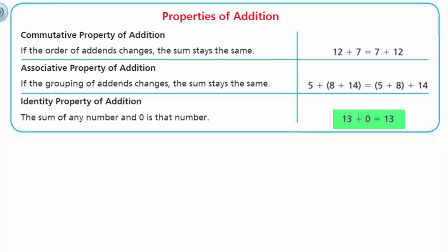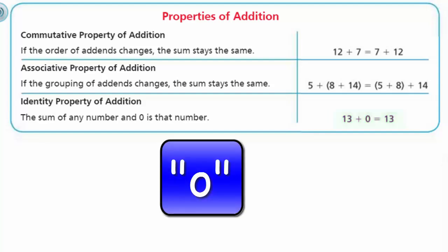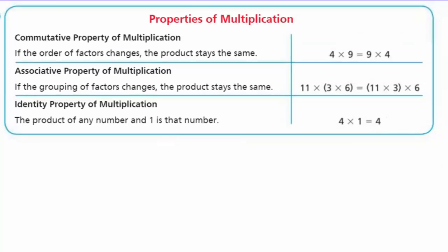It seems kind of simple because you're looking at it going, Mr. Warren, that's really obvious. 13 plus 0 equals 13. But it's important that you know this property because you'll be using it later in your educational career. Now let's look at properties of multiplication. Properties of multiplication are similar. They really are. Except that we're multiplying. Before we were adding, now we're multiplying.